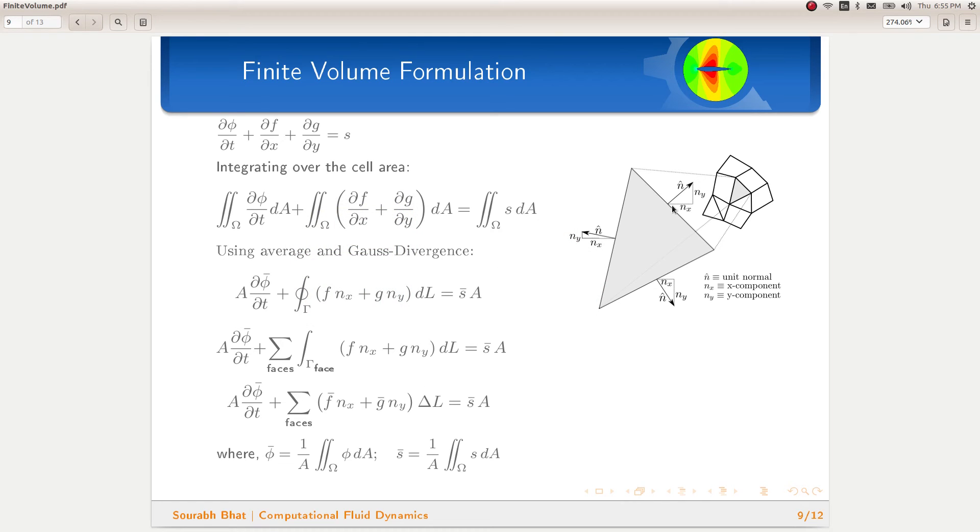The unit normal n-hat has components nx, ny and possibly nz for 3D cells, which are going to be different for each of the faces and the unit normal vector points outward of the cell and not inward as per standard convention.